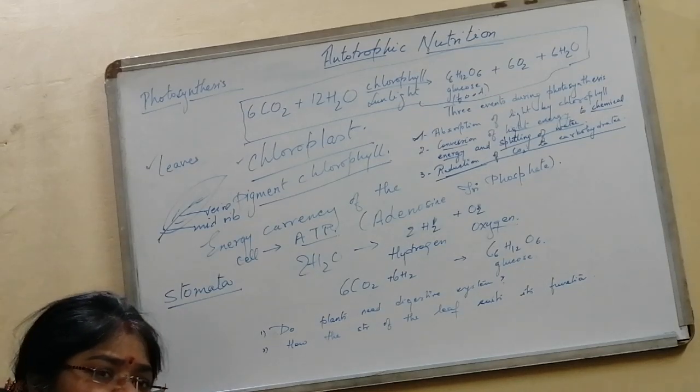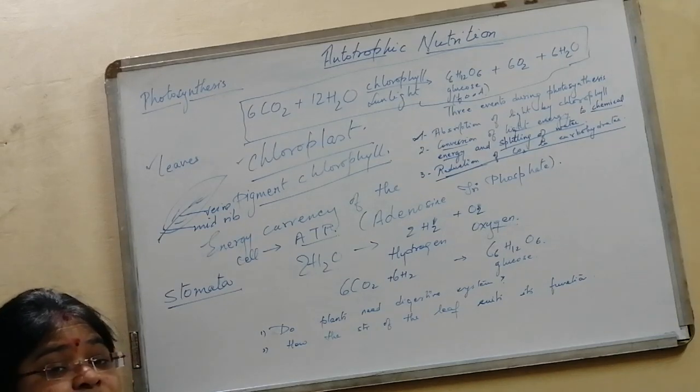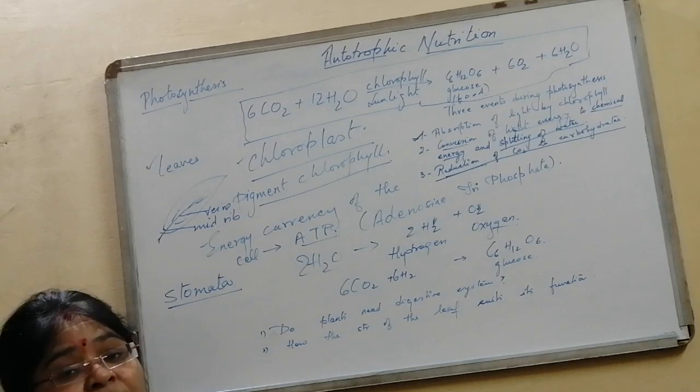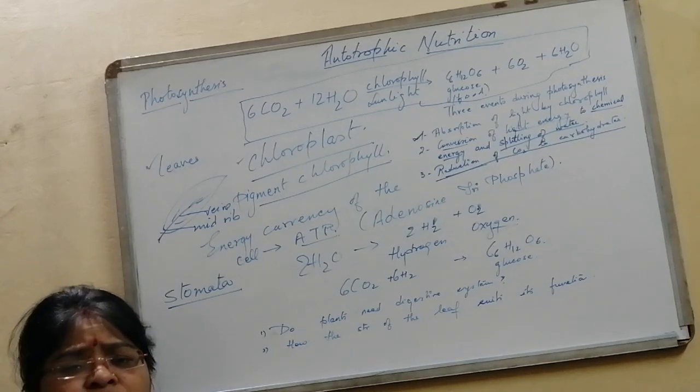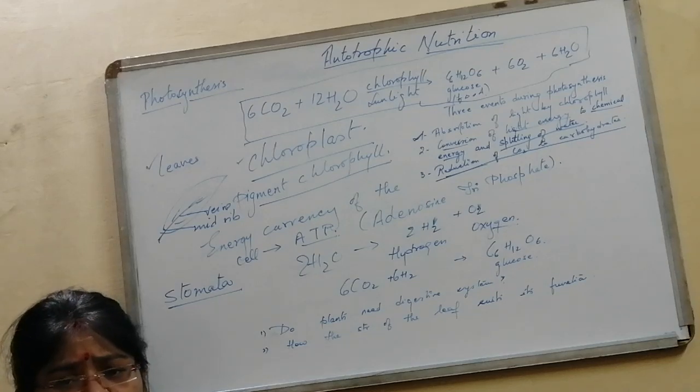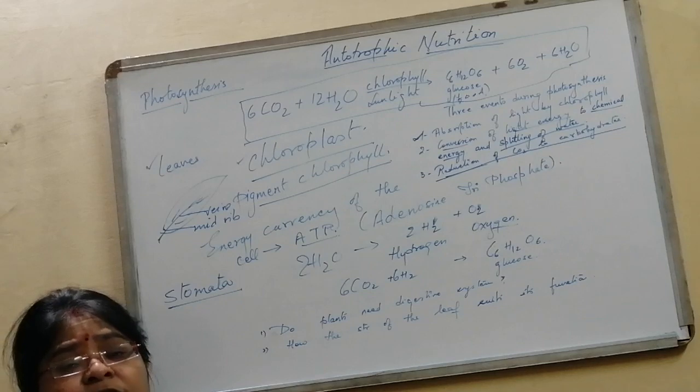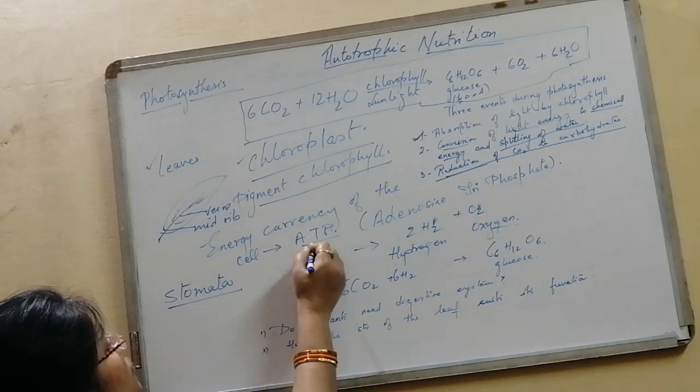There are various molecules in the chloroplast which convert this absorbed light energy into chemical energy. For any living organism, what is the currency of energy in our cells? The energy currency of the cell is ATP.